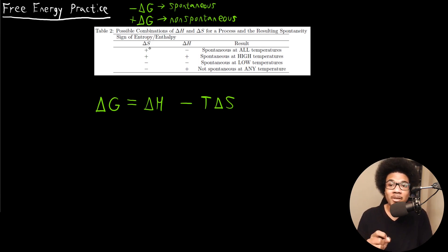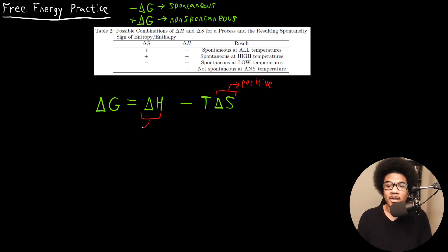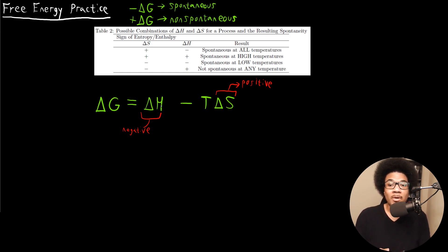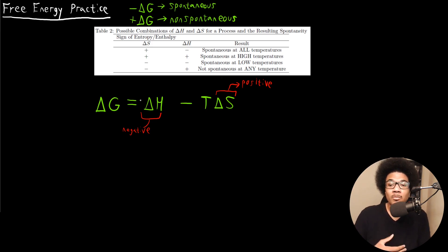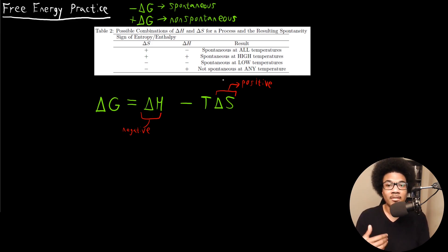Let's take the first case: a positive ΔS and a negative ΔH. If this is the case, the process will always be spontaneous. We know the ΔH and TΔS terms are subtracted. If entropy is positive, that term is negative, and if enthalpy is negative, that term is also negative. So ΔG will always be negative — you could crank the temperature up as high as you want, it's going to be a negative ΔG. The process will be spontaneous at all temperatures.